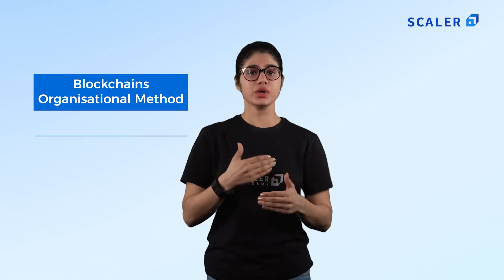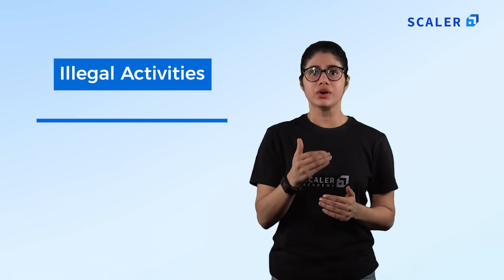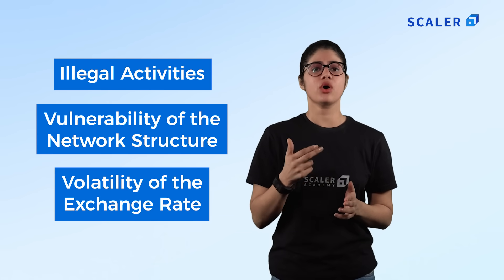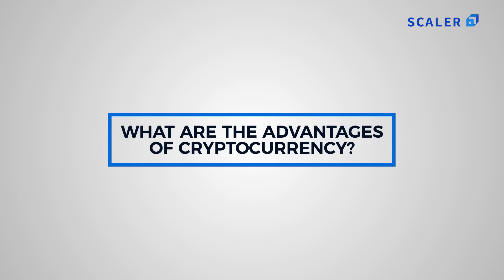The term cryptocurrency is coined because of the encryption process used to secure the digital network. Cryptocurrency uses blockchain's organizational method to ensure transactional integrity. Blockchain is a system that records transactions made in digital currencies such as Bitcoin or Ethereum. Many experts argue that blockchain can disrupt industries such as finance and law. Trading in cryptocurrency is legal, but it faces criticism due to its use in illegal activities, vulnerability of blockchain network structure, and exchange rate volatility.